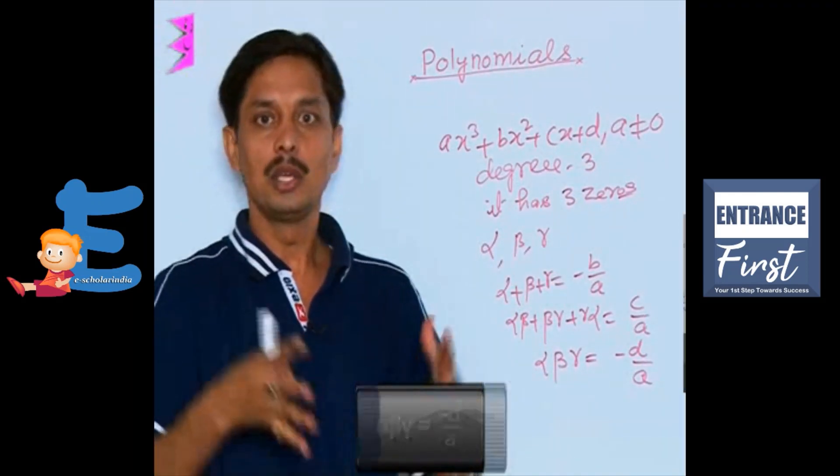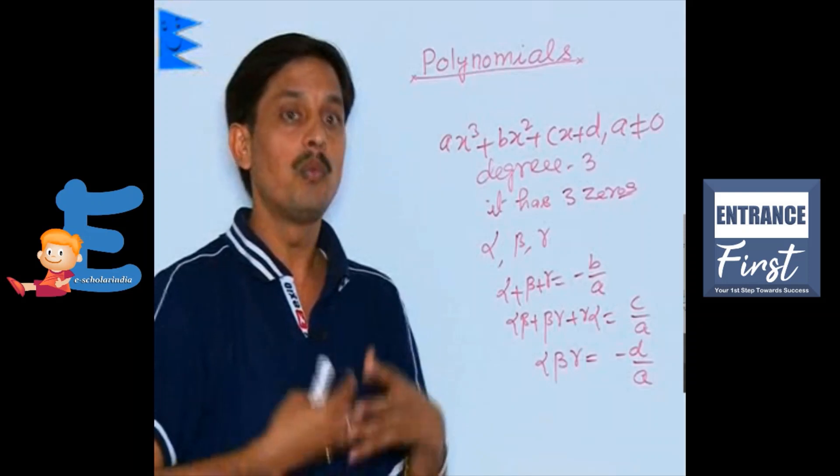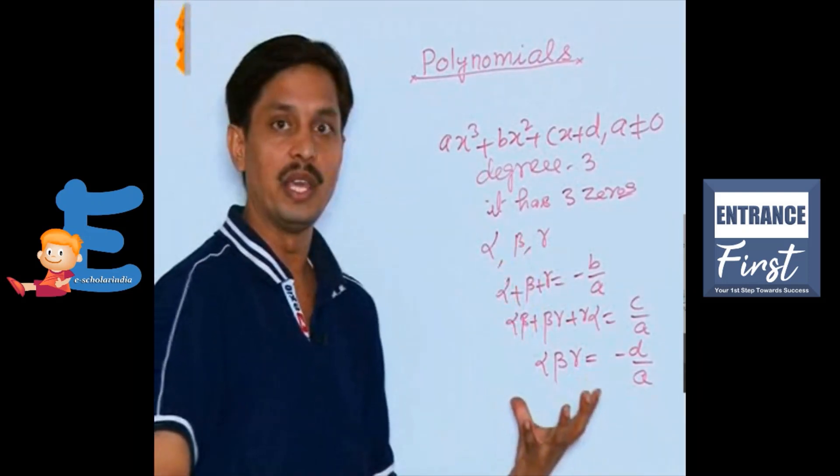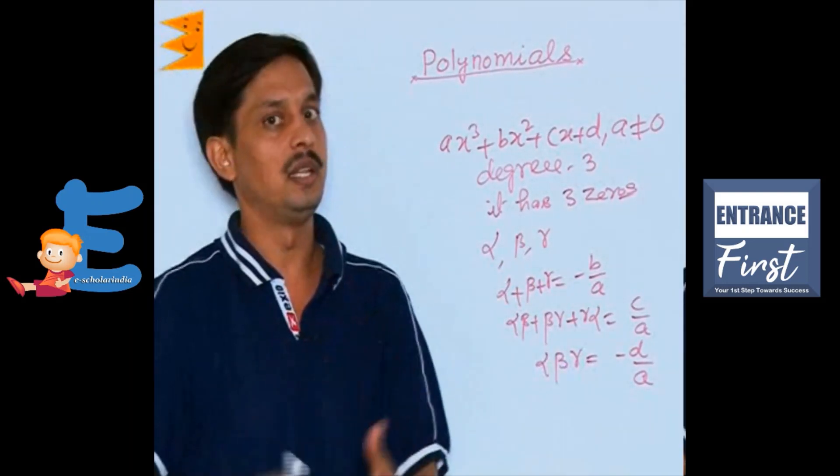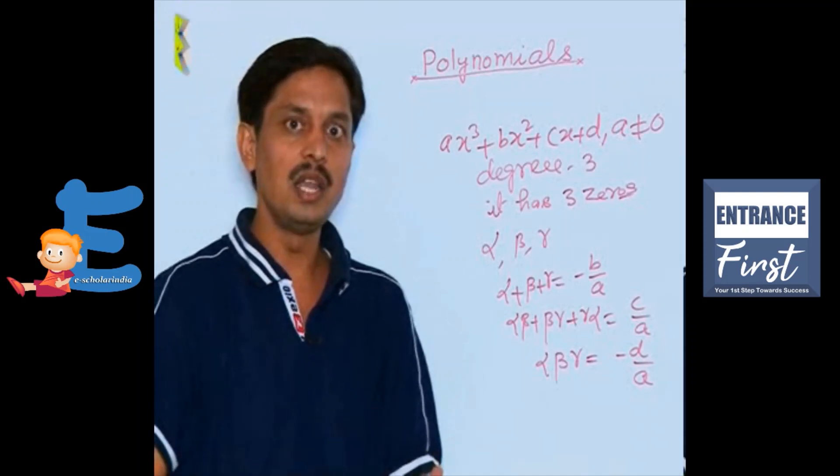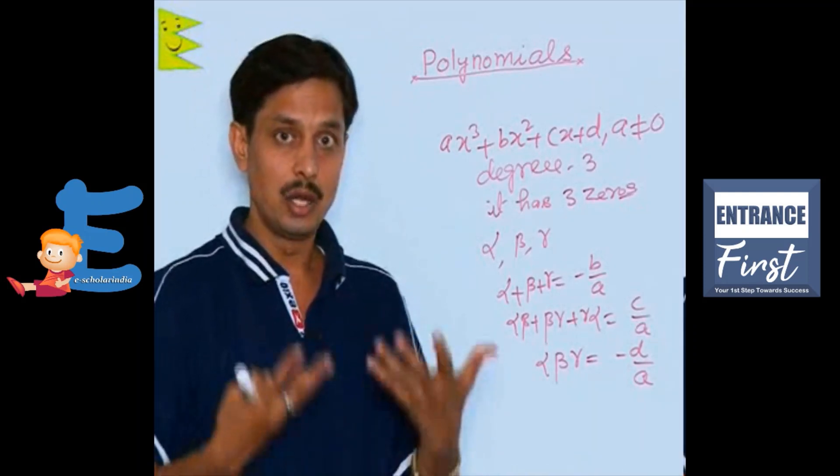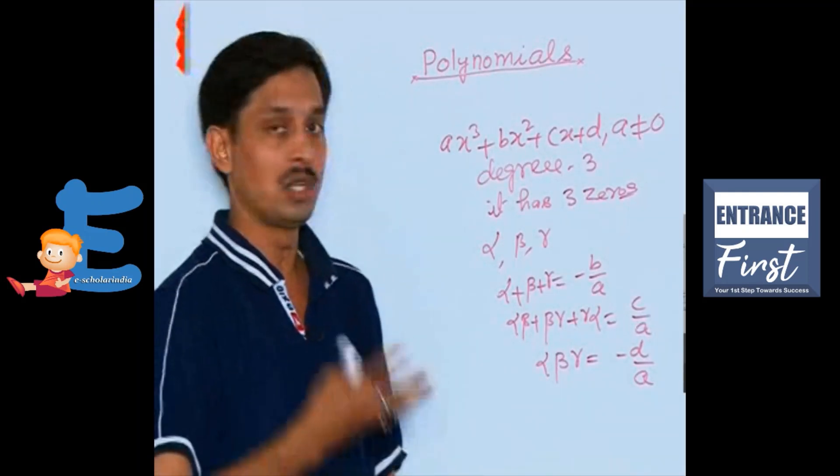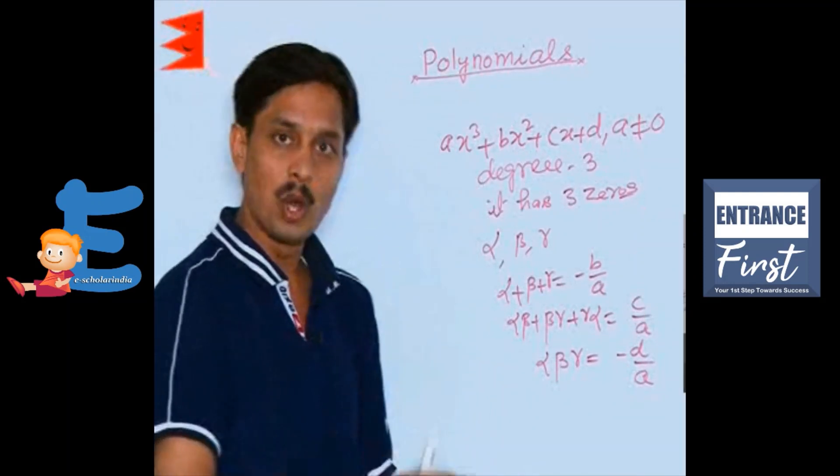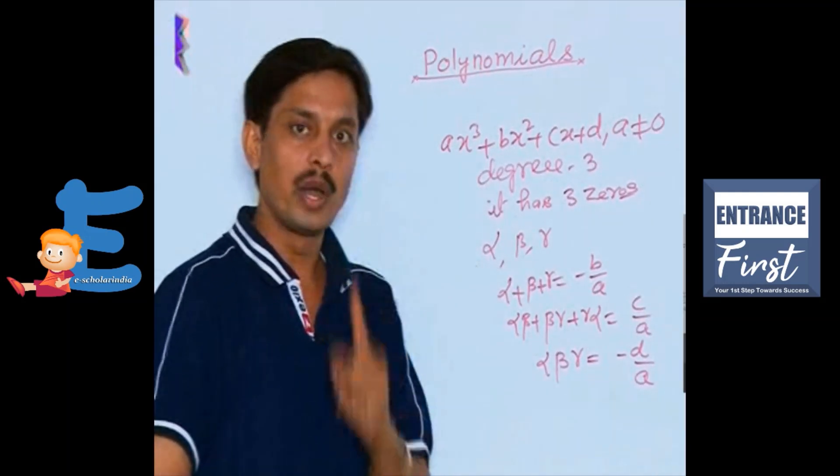If any cubic polynomial is given, then you can find or estimate or verify the relation of zeros and the coefficients, similarly as you have been doing the problems in verification of your problems of quadratic polynomial.